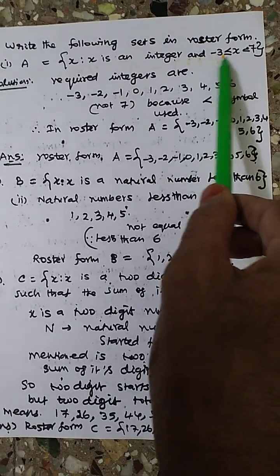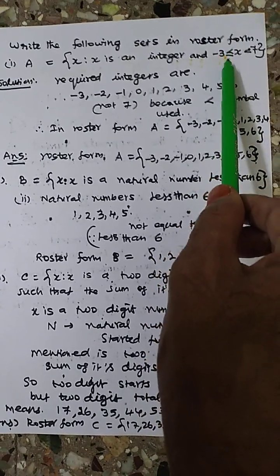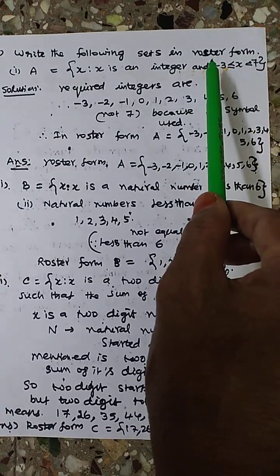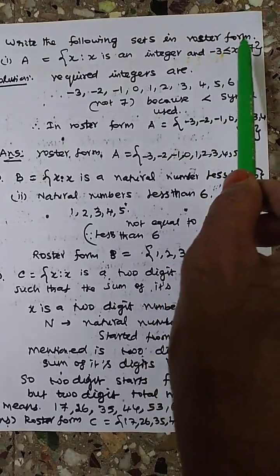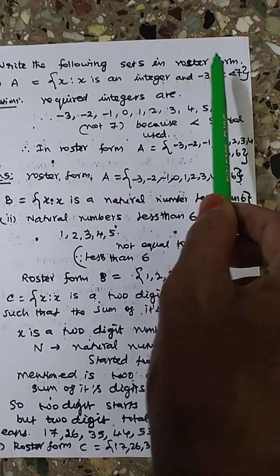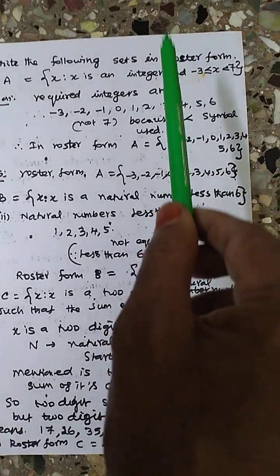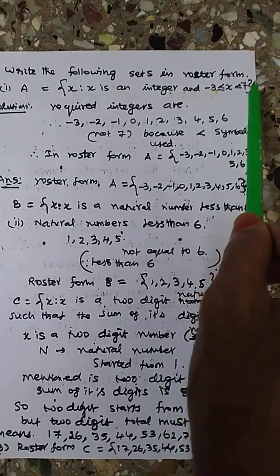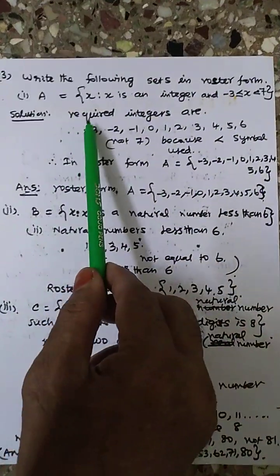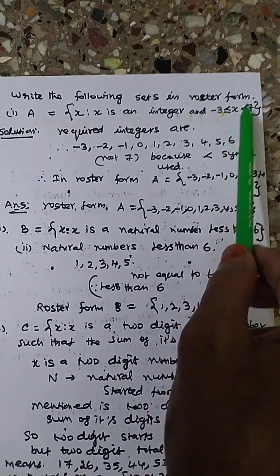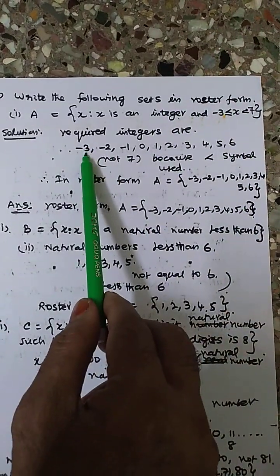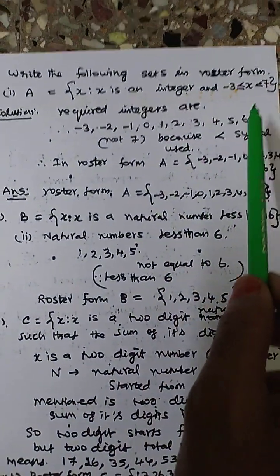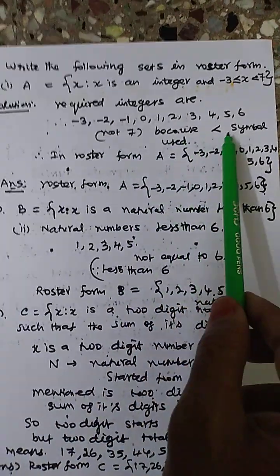Less than or equal to −3 means it could equal −3. Not only less than — like −2 — but also equal. So less than or equal to starts from −3: −3, −2, −1, 0, and so on. And X is less than 7, meaning 7 is not included — not equal to 7. Less than 7 means up to 6. So the required integers start from −3 and go up to 6, since the strict less-than symbol is used for 7.